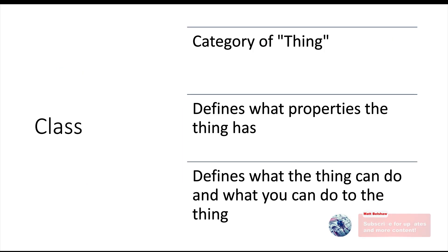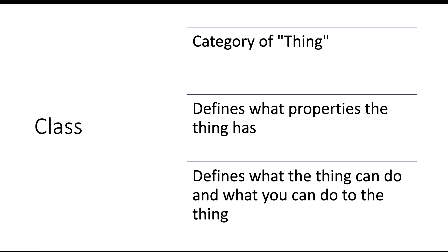So let's look at classes and what they actually are. Classes are essentially just a category of thing. A class defines what properties the thing has, what the thing can do, and what you can do with the thing. For now, let's not worry too much about that last part and focus on the category and what properties it has.